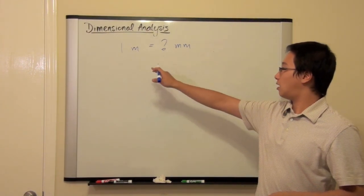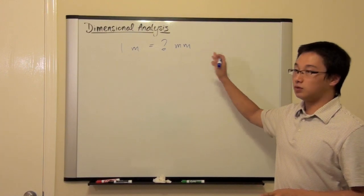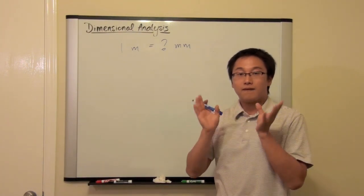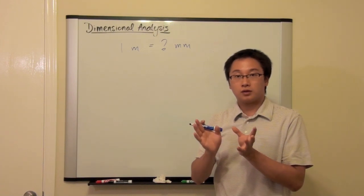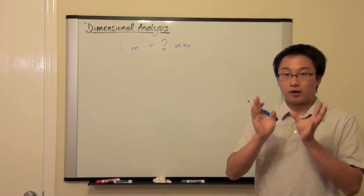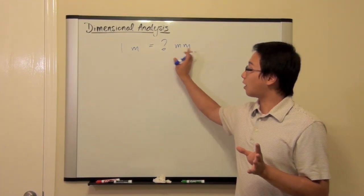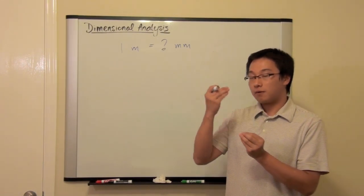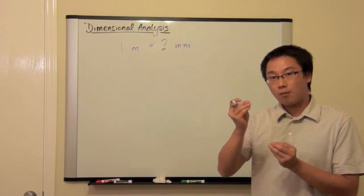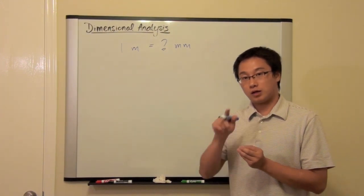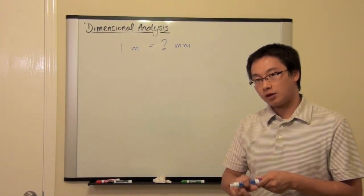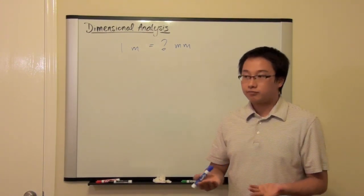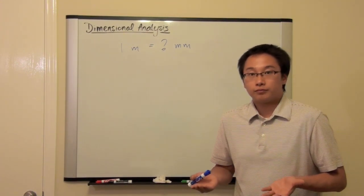But I want to show you a very simple way that can tackle this type of problem if you followed my instruction previously that understanding those K, H, whatever, K, H, D, U, D, C, M, those letters, those alphabets, they are numbers. If you acknowledge that they are numbers, then we can talk about this in a very simple way.